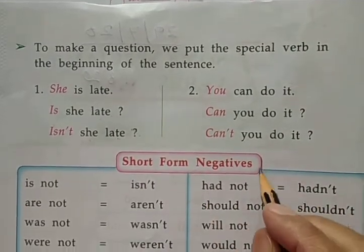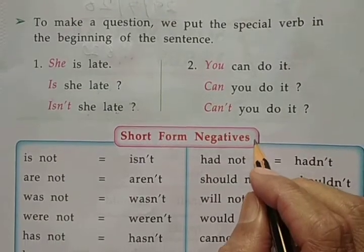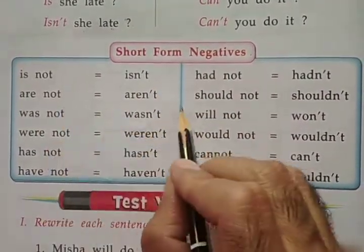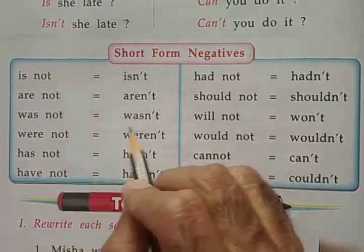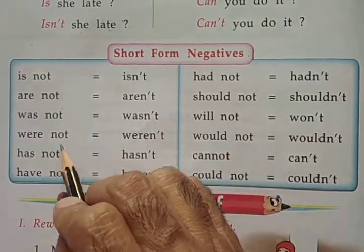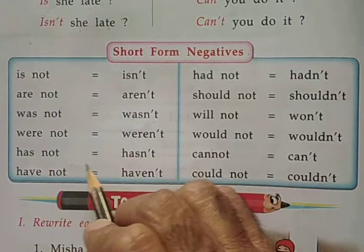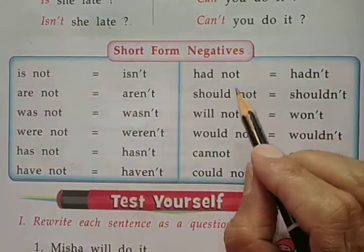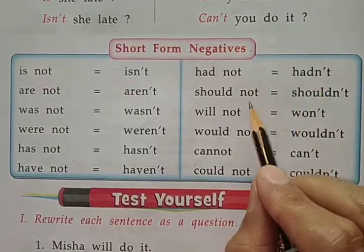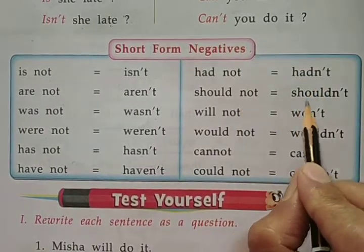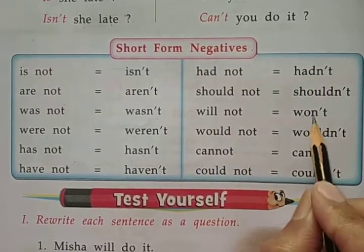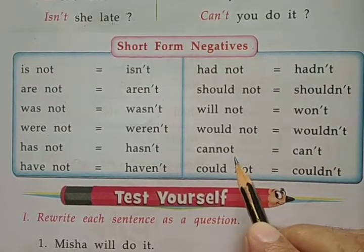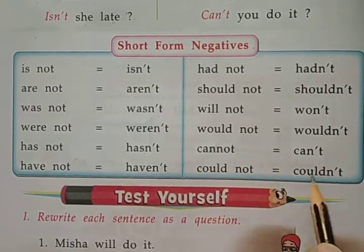There are some short forms of negatives: Is not — isn't. Are not — aren't. Was not — wasn't. Were not — weren't. Has not — hasn't. Have not — haven't. Had not — hadn't. Should not — shouldn't. Will not — won't. Would not — wouldn't. Cannot — can't. Could not — couldn't.